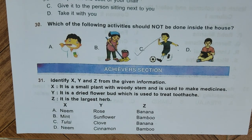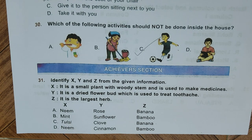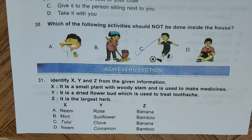Achiever section. Question 31: Identify X, Y, and Z from the given information. X is a small plant with a woody stem used to make medicines. Y is a dried flower bud used to treat toothache. Z is the largest herb. Options: A. Neem, Rose, Banana; B. Mint, Sunflower, Bamboo; C. Tulsi, Clove, Banana; D. Neem, Cinnamon, Bamboo. Correct answer is C — Tulsi for X, Clove for Y, and Banana for Z.